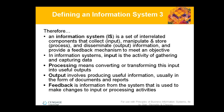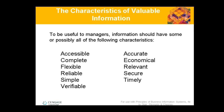An information system, also known as IS, is a set of components. Processing means converting or transforming data. Basically you have input, processing, output, and feedback. For example, an input could be a person clicking a mouse — the computer processes that click, the output is a cursor moving on screen, and the feedback is what you see happen, like a file opening. That's how it works: input, processing, output, feedback.